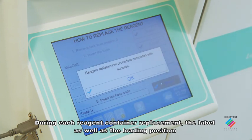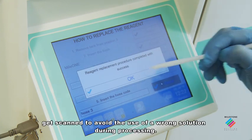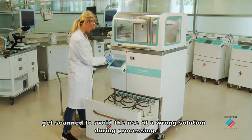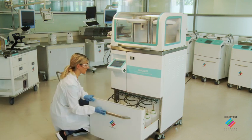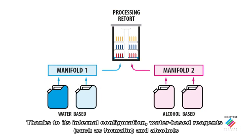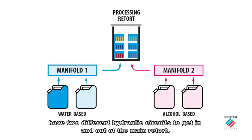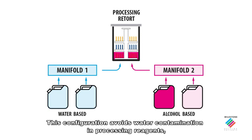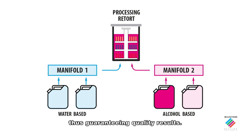The label as well as the loading position gets scanned to avoid the use of a wrong solution during processing. Thanks to its internal configuration, water-based reagents such as formalin and alcohols have two different hydraulic circuits to get in and out of the main retort. This configuration avoids water contamination in processing reagents, thus guaranteeing quality results.